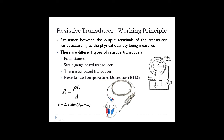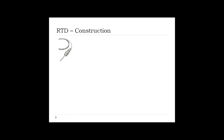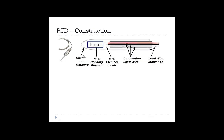Today we will see how the RTD functions as a resistive transducer. This is a schematic or image of an RTD — it has three leads. Resistance is given by: R = ρL/A, where ρ is resistivity, L is length, and A is the cross-sectional area of the material. Regarding construction, this is the cut section of the sensing element in the RTD, which has three leads.